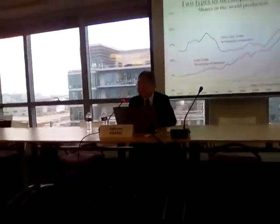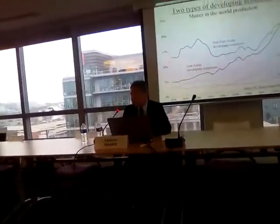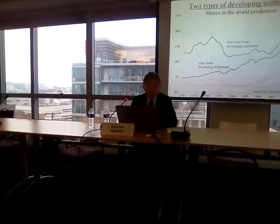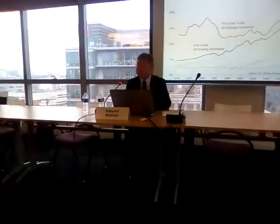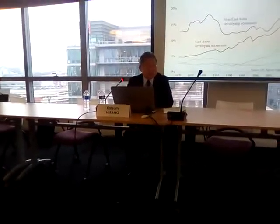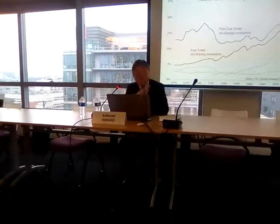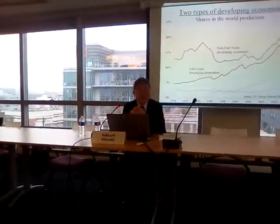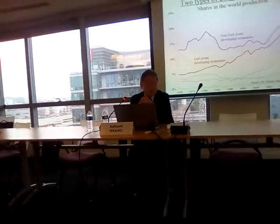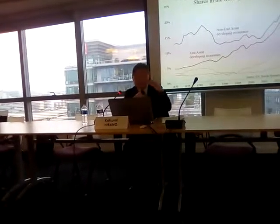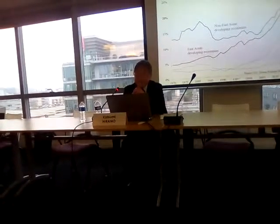This graph shows two types of developing country groups. In the developing world, there are two groups with distinctly different historical pasts. The blue line shows developing countries who mainly exported natural resources — this group is fluctuated. This graph is made by the share of global production, and the blue group is fluctuated. In a period of resource price hike, it barely attained 20% of global production.